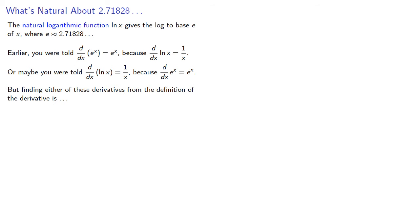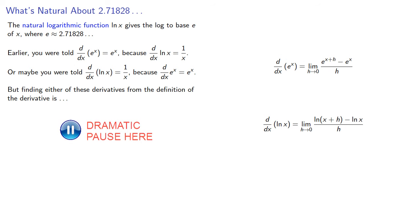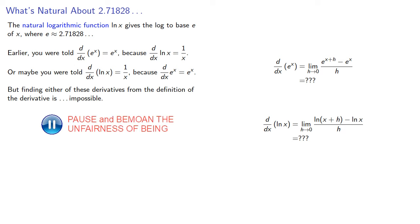But finding either of these derivatives from the definition of the derivative is impossible. And why is 2.71828 a natural base? We'll answer these questions using a technique drawn from the history of mathematics.